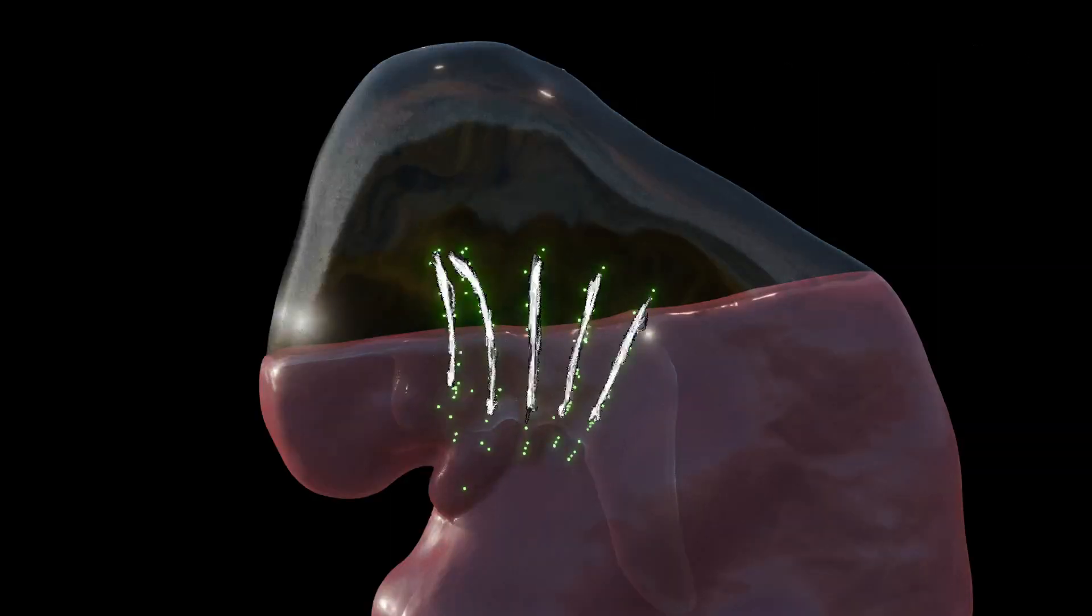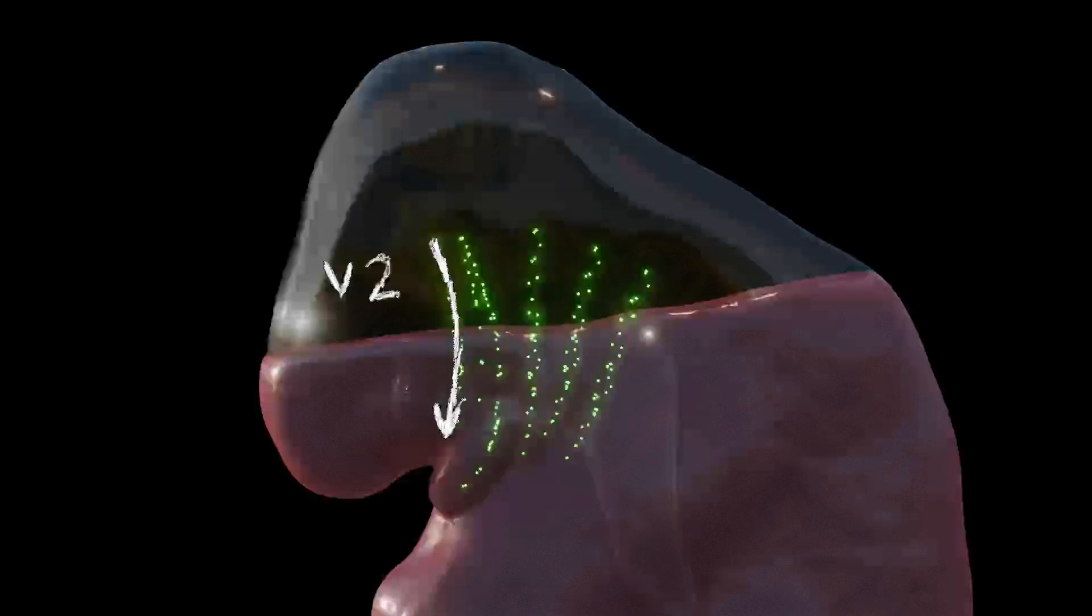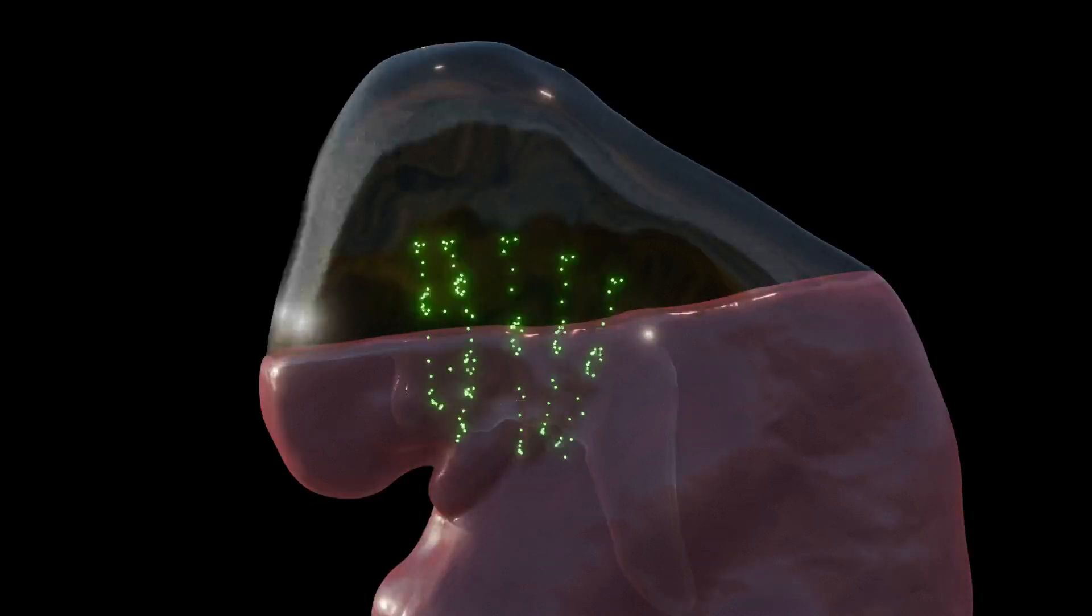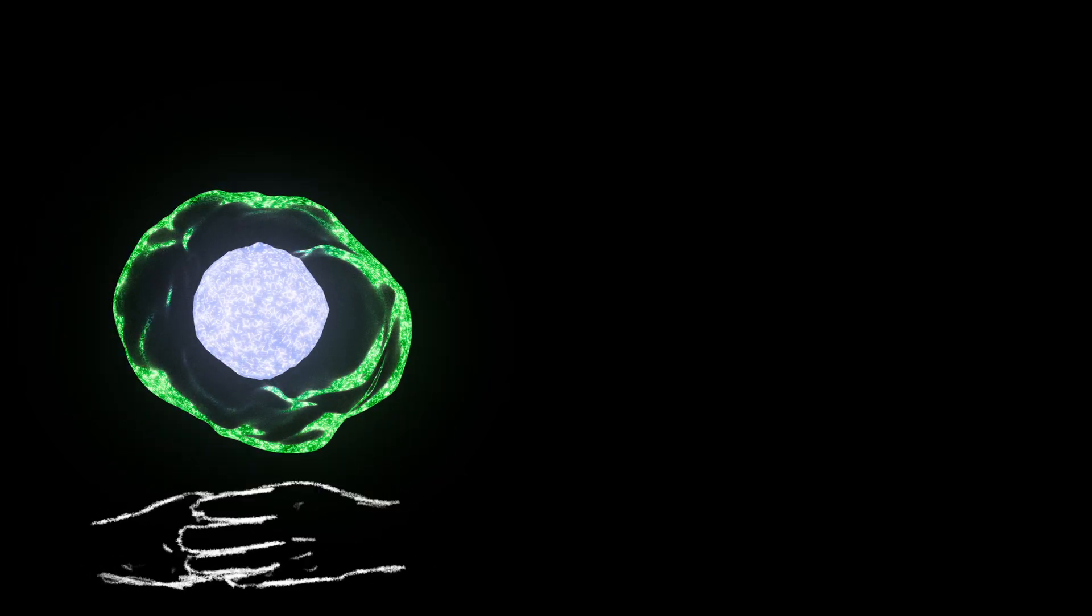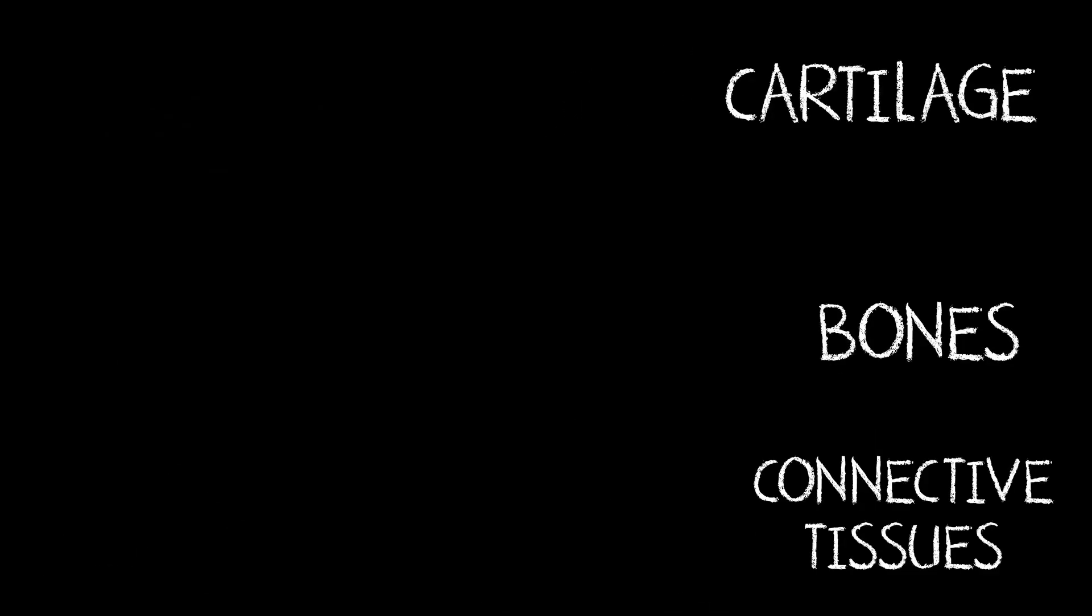The paths these cells follow are not random. They're precisely coordinated to help form the maxillary V2 and mandibular V3 branches of cranial nerve 5, as well as cranial nerves 7, 9, and 10, which will later innervate different head and neck structures. Even more impressive, these neural crest cells direct much of the differentiation within the arches, guiding the development of key structures like cartilage, bones, and connective tissues.